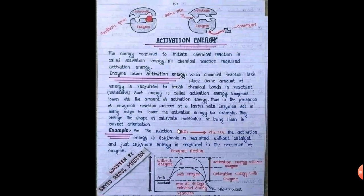Enzymes facilitate reactions in the body by lowering the activation energy. If a large amount of energy is needed to break a bond and form a product, enzymes lower that activation energy. For example, the activation energy of a reaction may be a large amount, but when you add an enzyme — a catalyst — just a small amount of energy per mole is required. In the presence of the enzyme, only this smaller energy is required for the reaction to proceed.